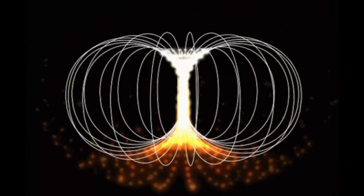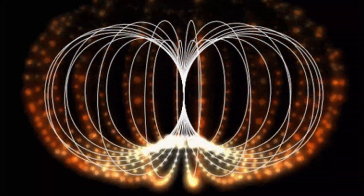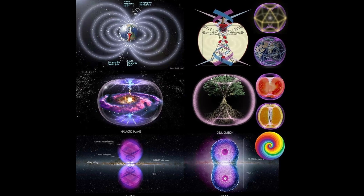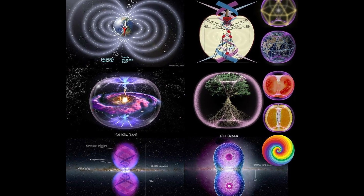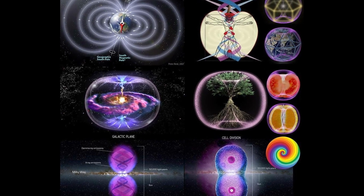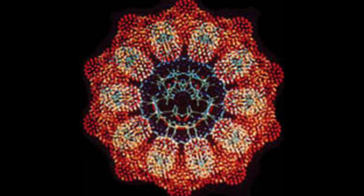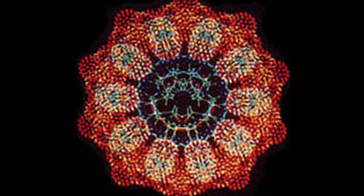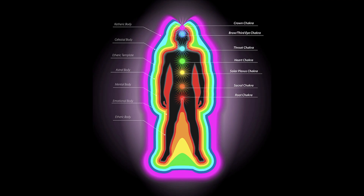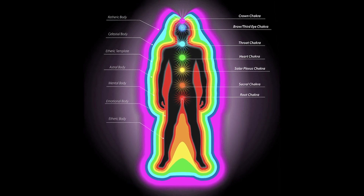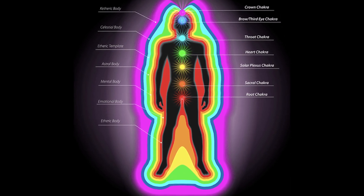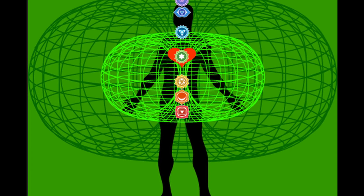And to build on what we were just talking about, how all torsion fields collapse in their center — each and every cell in your body is also a torsion field. And where does that collapse? Quite possibly within your DNA. And then also each one of your cells is reporting back to your greater energy field, which itself is a torsion field in shape.